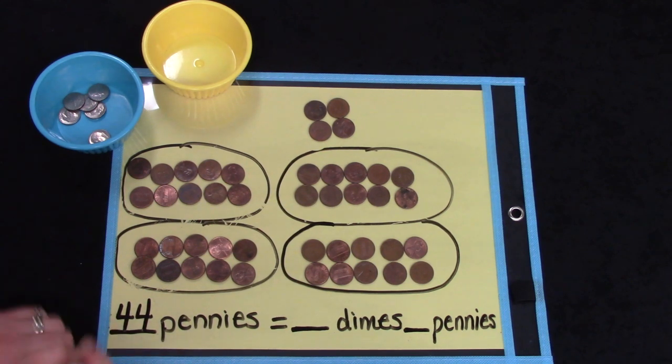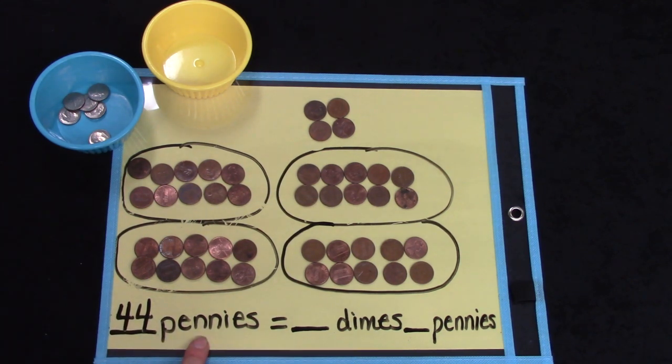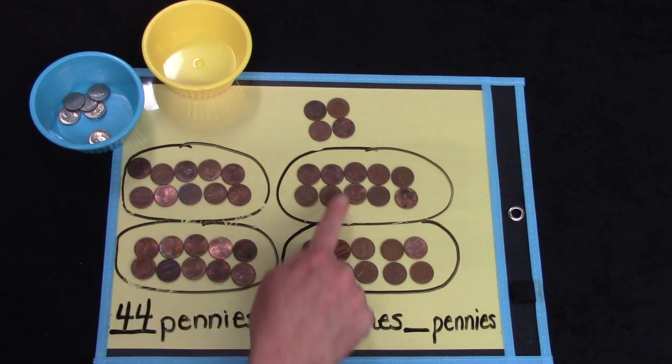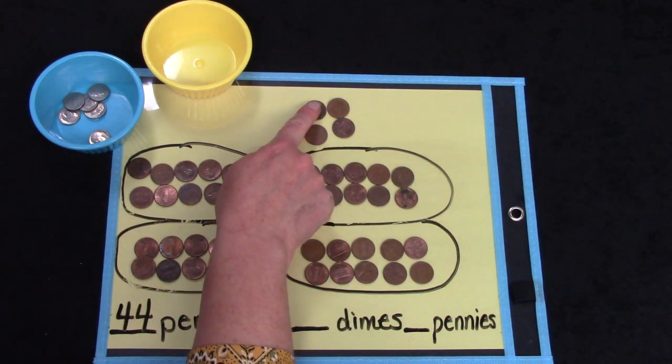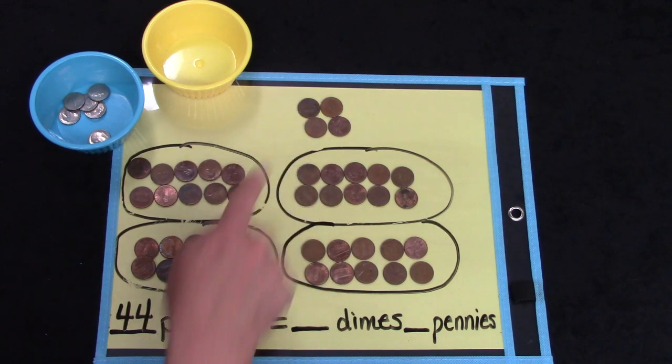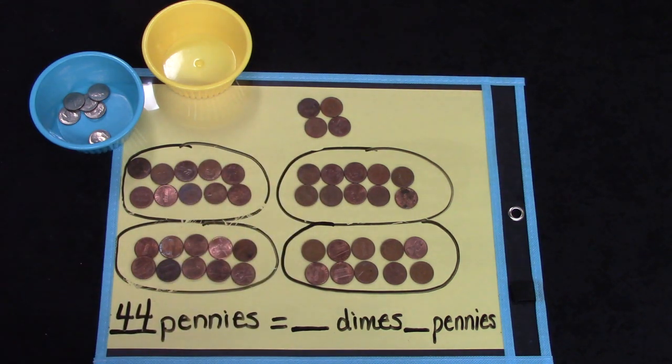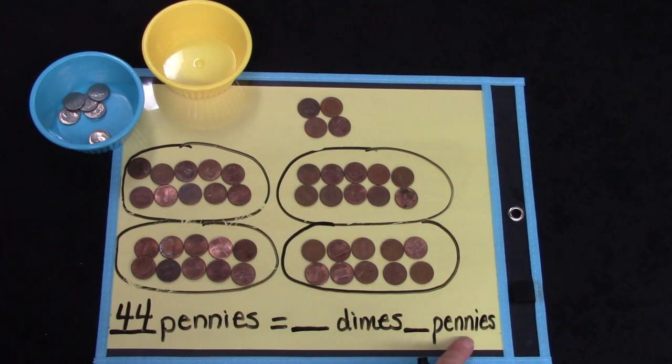Class, I would love for you to count out 44 pennies. I put mine in groups of 10. 10, 20, 30, 40, 41, 42, 43, 44. When you have 44 pennies, I would like for you to think, hmm, how many dimes and how many pennies is that?